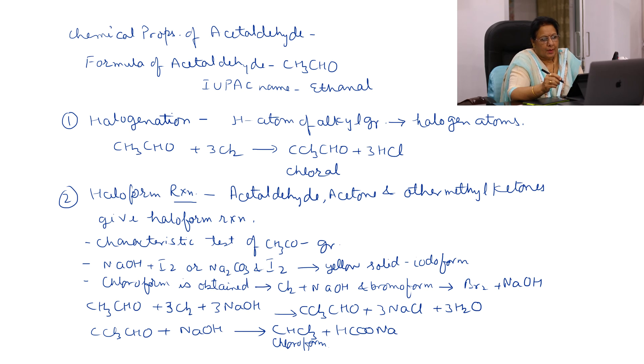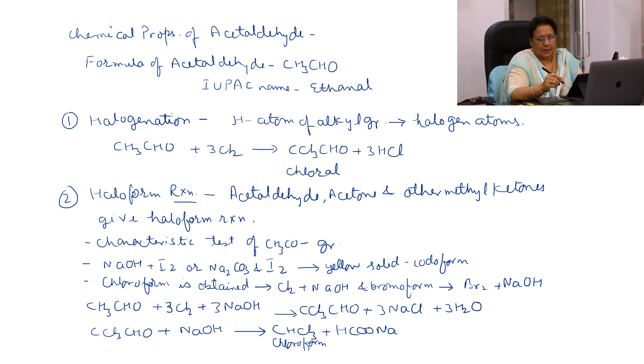Welcome to chemistryonline.group. Today we will discuss the chemical properties of acetaldehyde. The formula of acetaldehyde is CH3CHO, and its IUPAC name is ethanal.